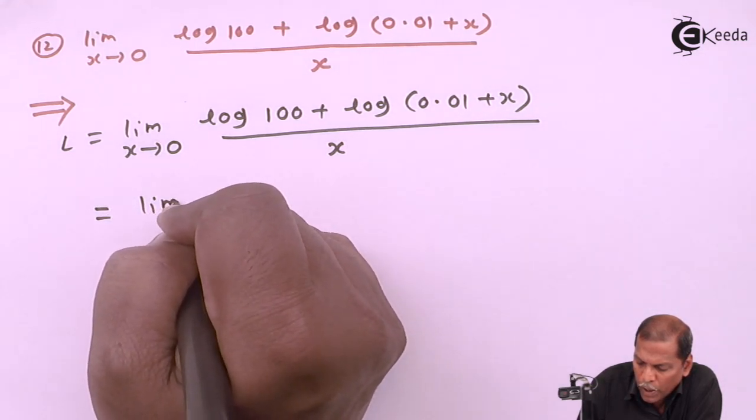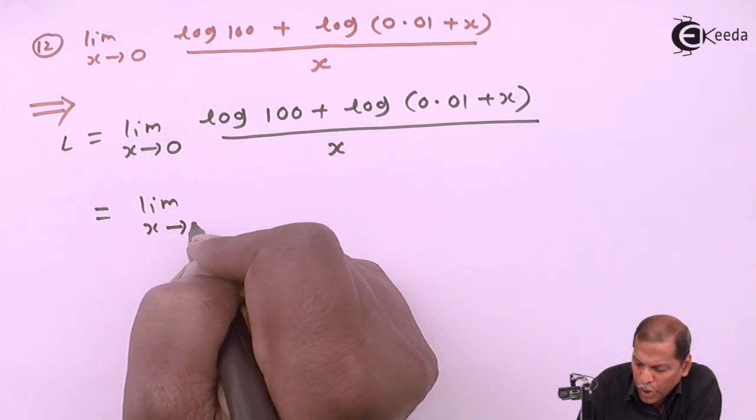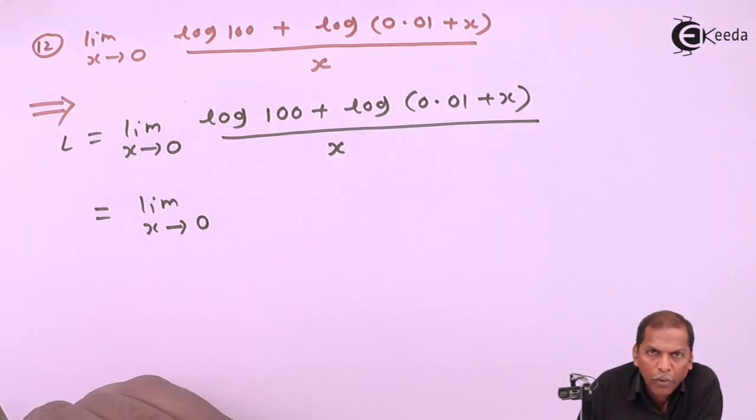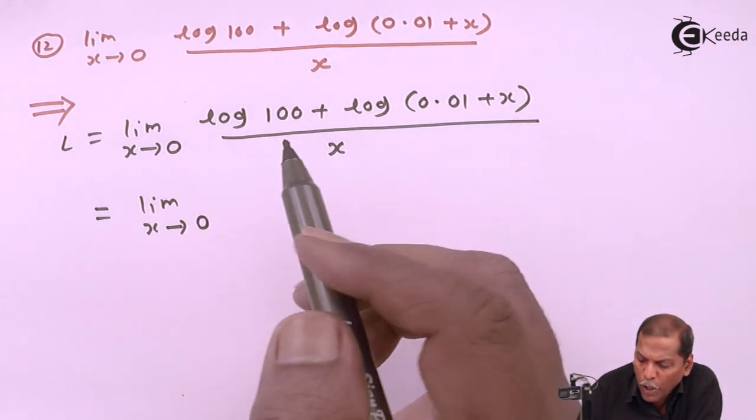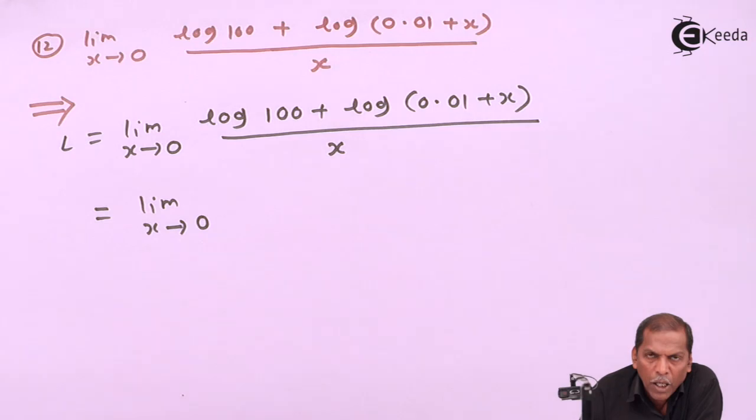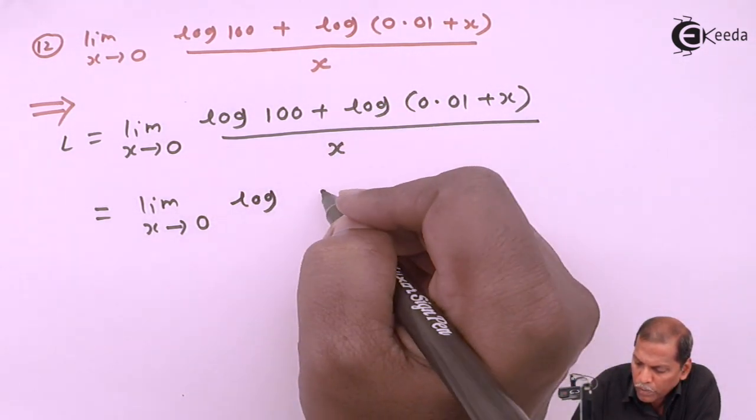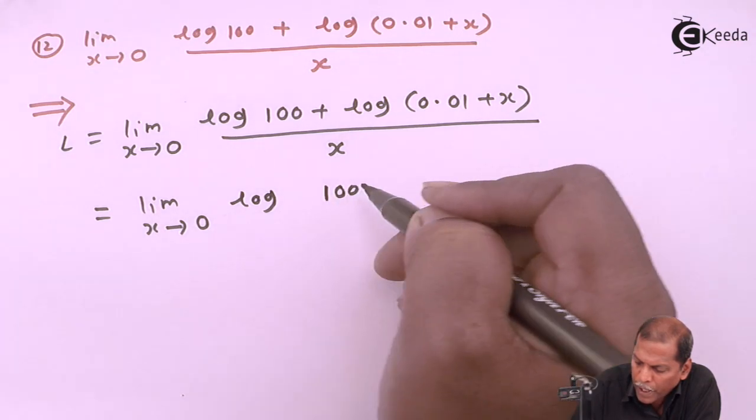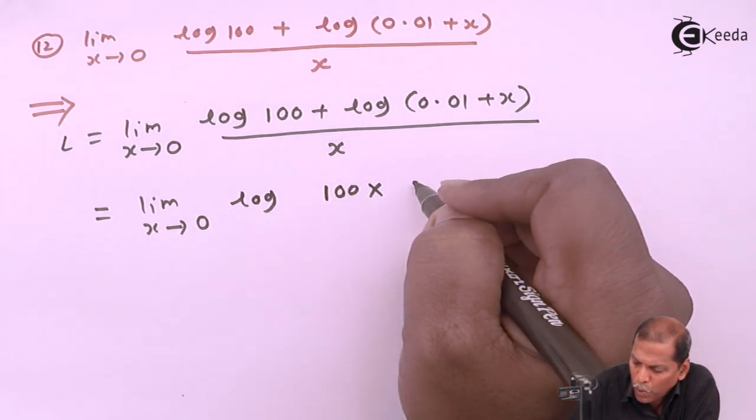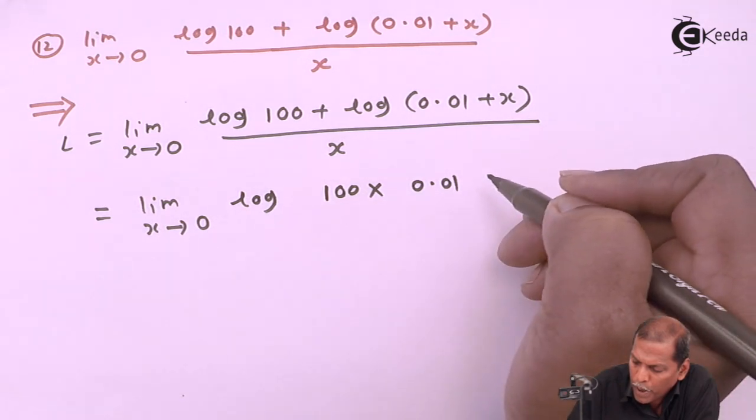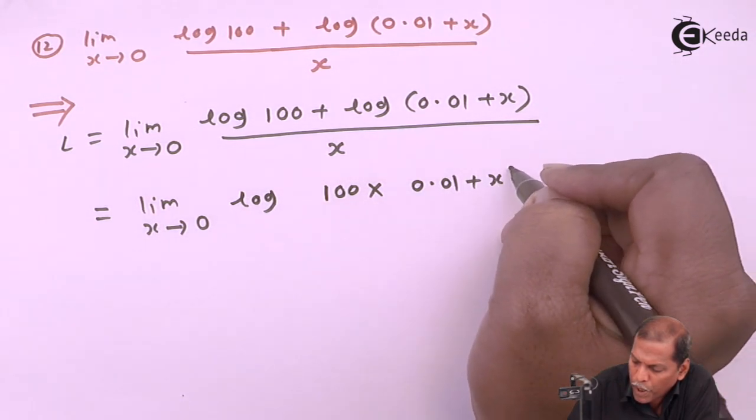That equals limit as x tends to 0. Now in the numerator we apply the rule that log a plus log b is equal to log(a times b) - that is called the law of product. So here we get log[100 times (0.01 + x)] divided by x.